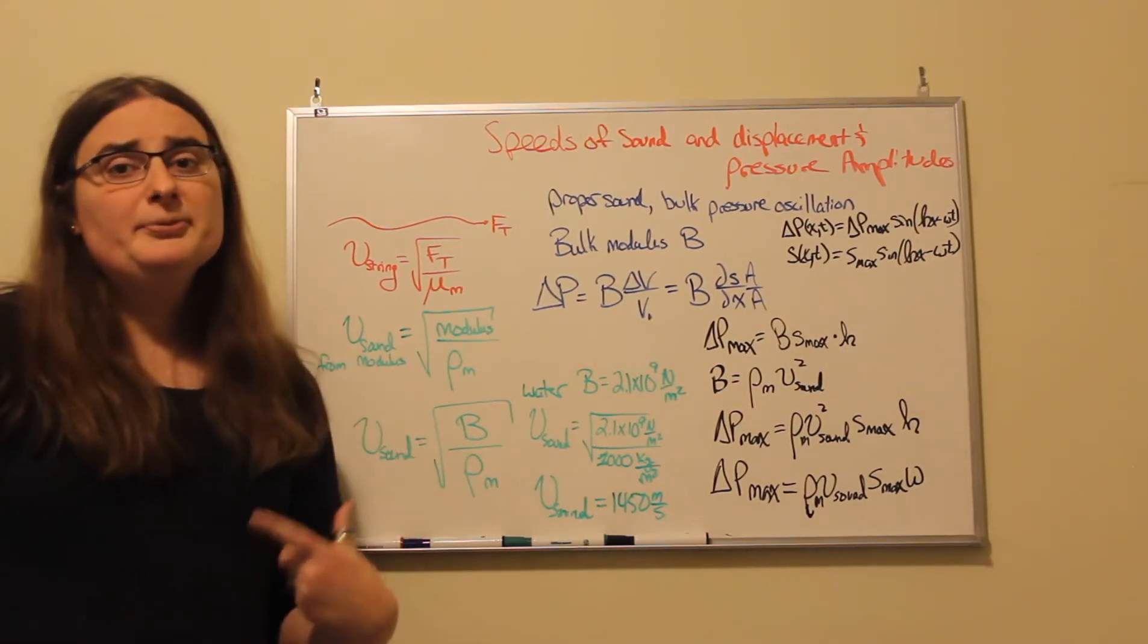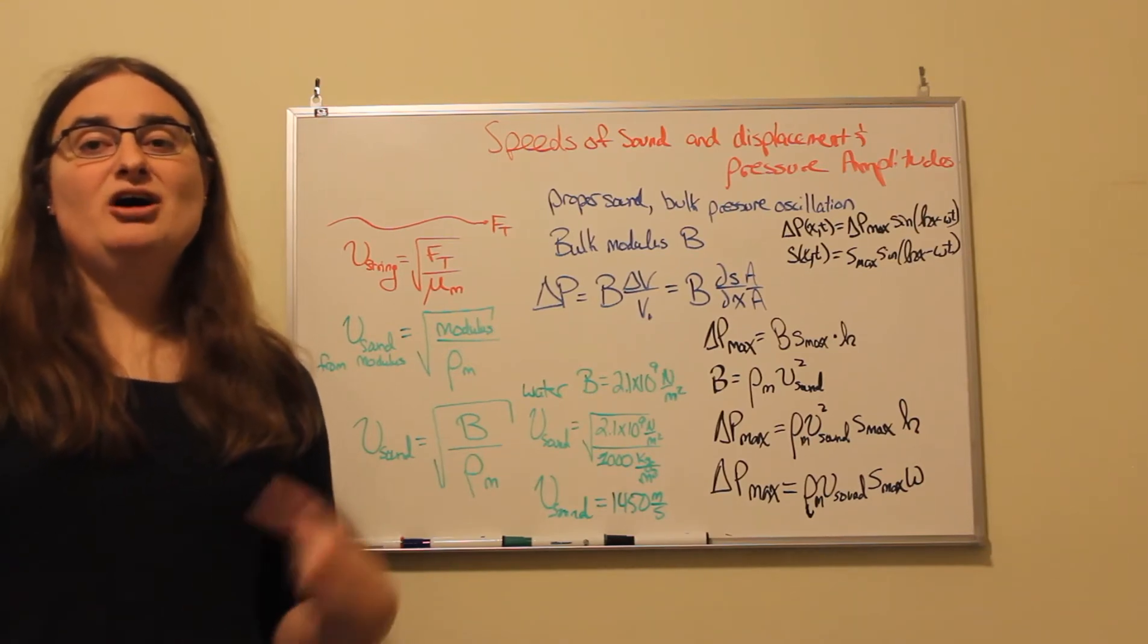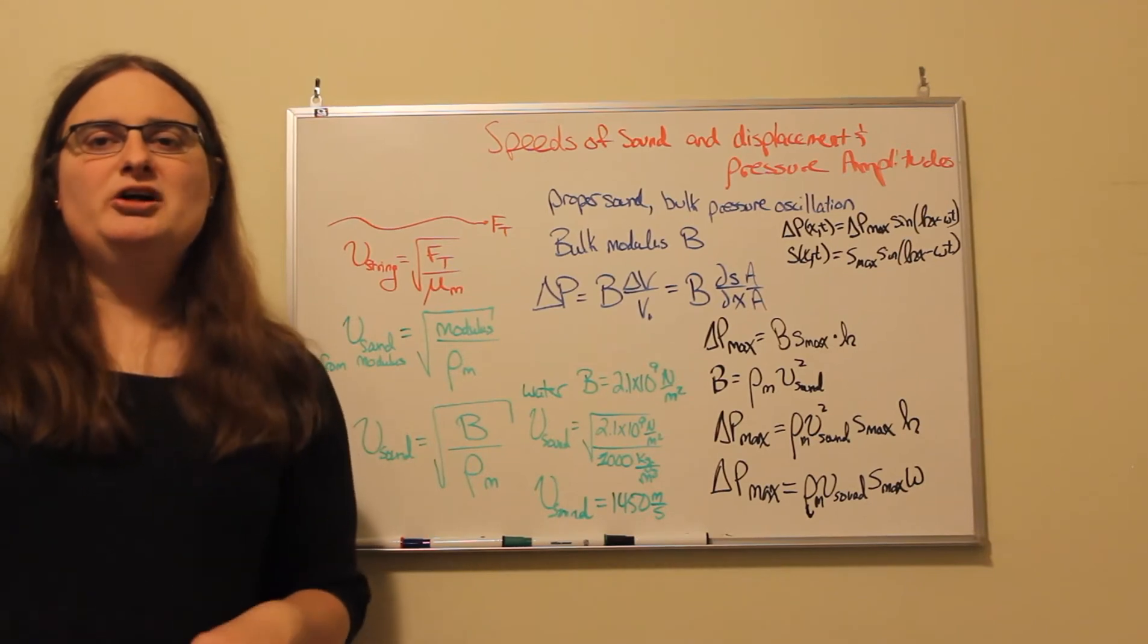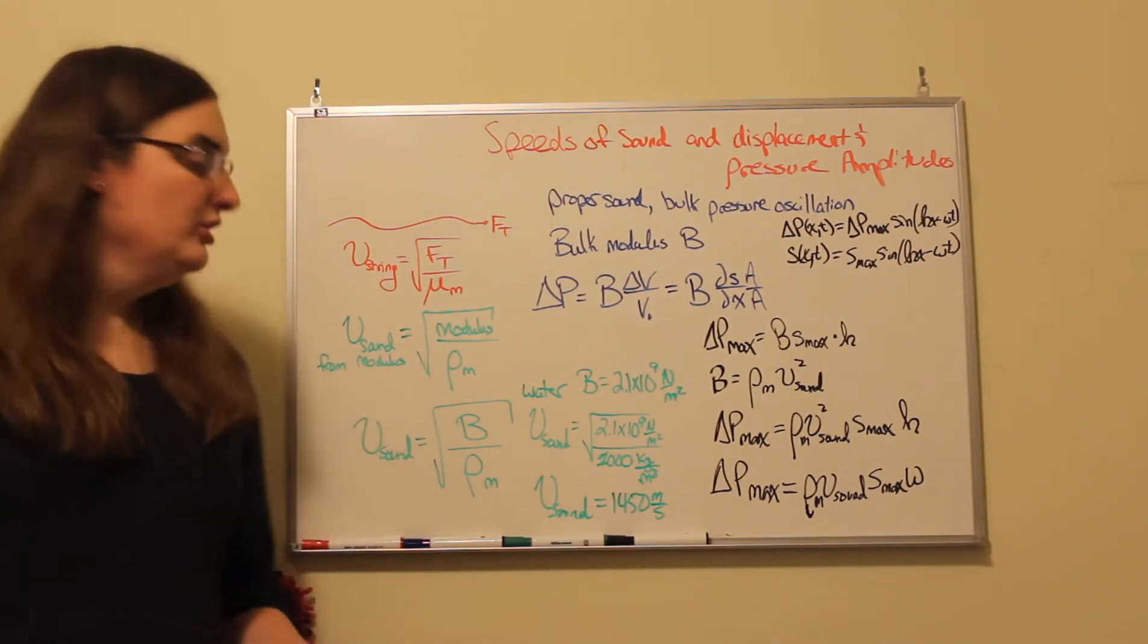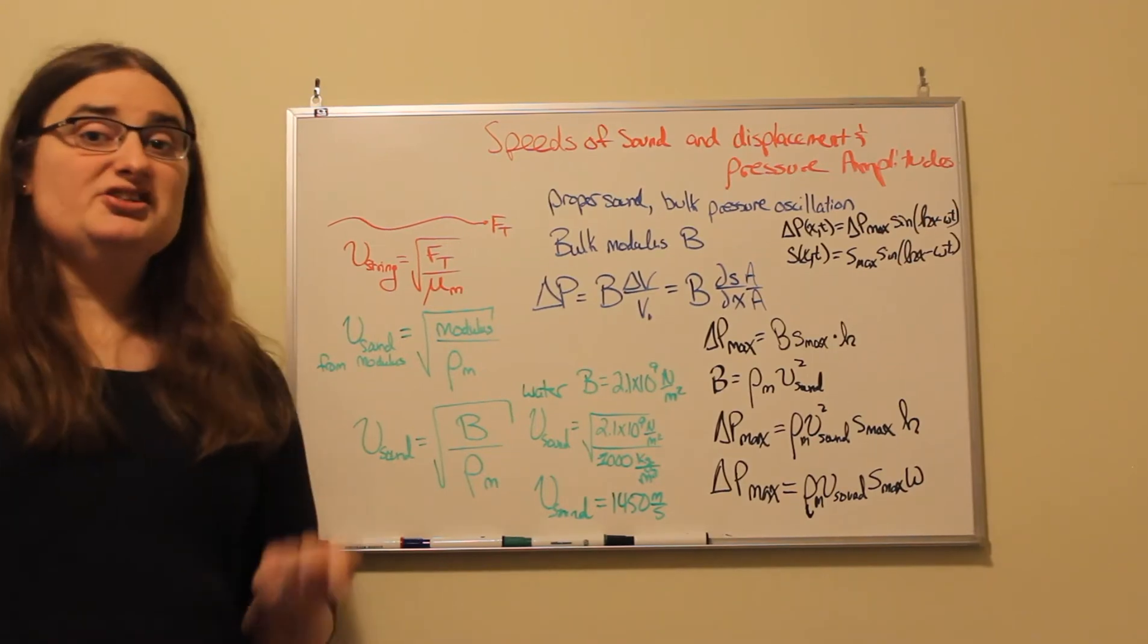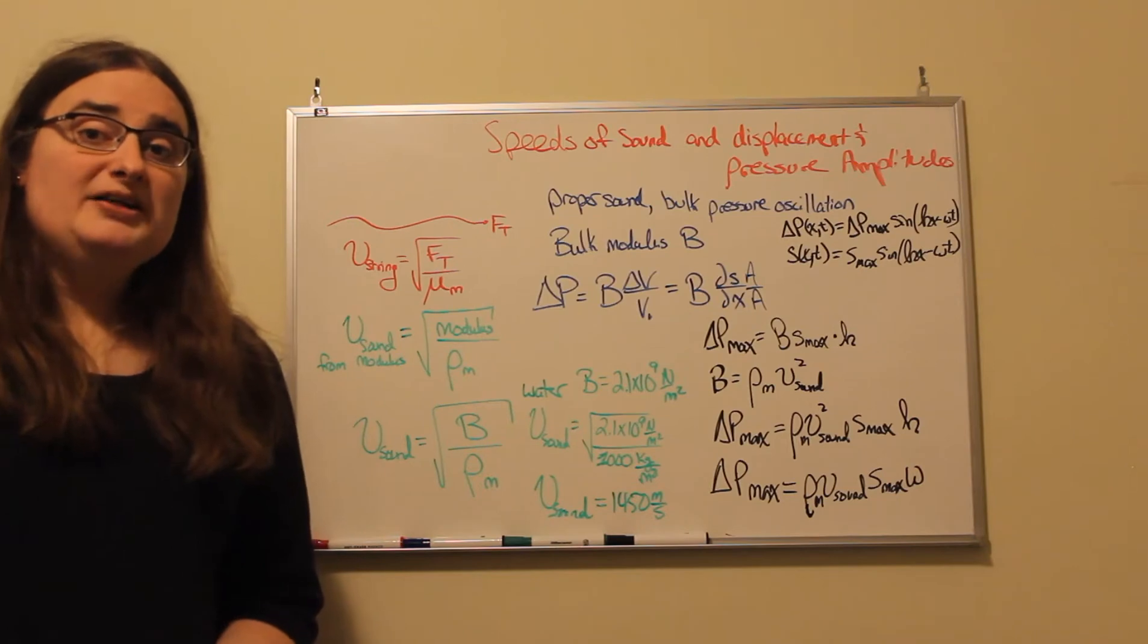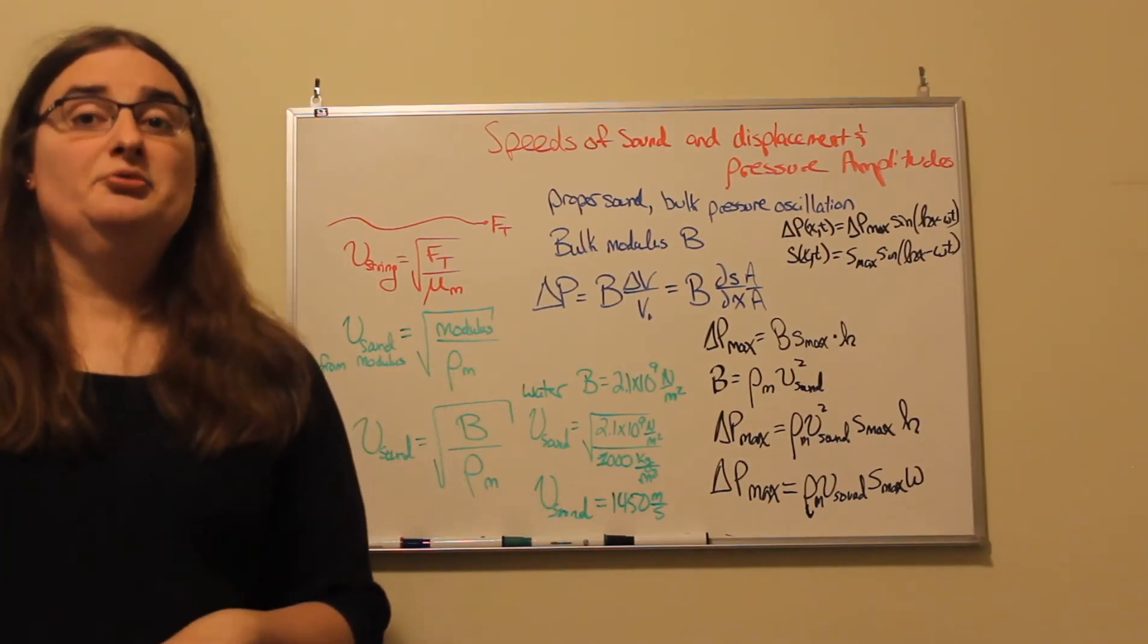Now what we call proper sound is an oscillation based off the bulk modulus, which is the resistance to bulk compression in a material subject to a change in pressure. So with the bulk modulus, the speed of sound would be equal to the bulk modulus divided by the density of the material, and then we take the square root.